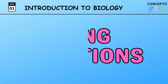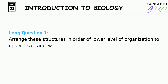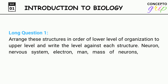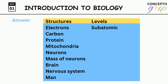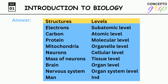Long Questions. Long question 1: Arrange these structures in order from lower to upper level of organization and write the level against each structure: Neuron, Nervous system, Electron, Man, Mass of neurons, Carbon, Mitochondria, Brain, Protein. Answer — Structures and levels: Electrons – Subatomic level; Carbon – Atomic level; Protein – Molecular level; Mitochondria – Organelle level; Neurons – Cellular level; Mass of neurons – Tissue level; Brain – Organ level; Nervous system – Organ system level; Man – Individual level.